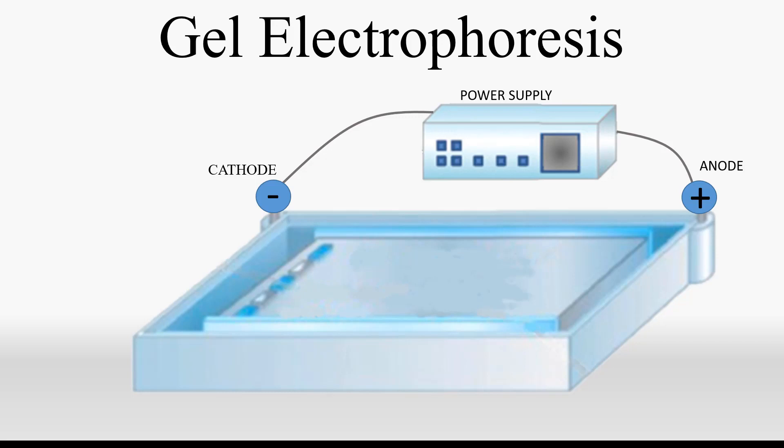Gel electrophoresis is a basic tool used to separate molecules based on charge and size. This is done by passing an electric current over a gel, forcing the molecules of interest within the gel to migrate at varying speeds across it.